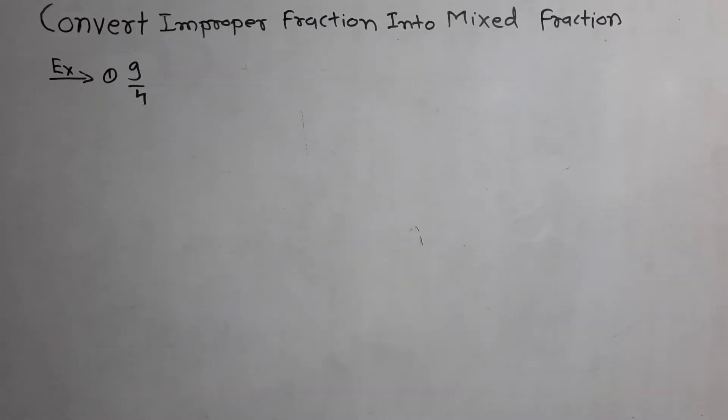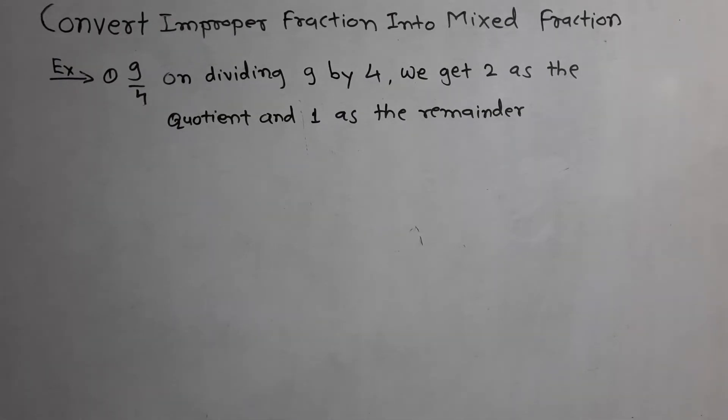Next, convert improper fraction into mixed fraction. Example 9 by 4. On dividing 9 by 4, we get 2 as the quotient and 1 as the remainder.